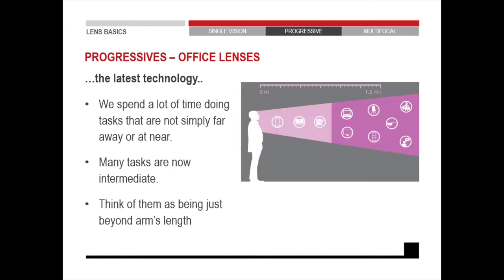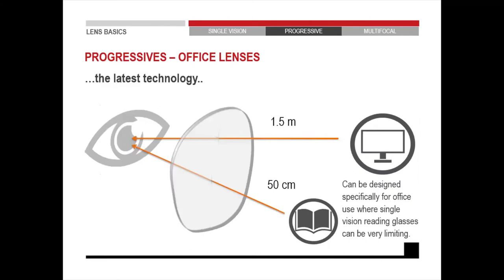We spend a lot of time doing tasks that are not simply far away or at near — most of our tasks are in the intermediate visual zone, which is everything beyond arm's length. The lenses we use for those tasks as well as near tasks are called office lenses, because that is basically the distance range used in an office environment. Those lenses can be custom made — for example, an office lens where the top part focuses at 1.5 meters and the bottom focuses at 50 centimeters.